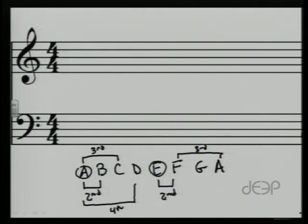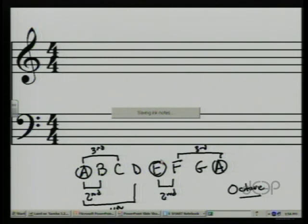A to F is a sixth. A to G is a seventh. And from A to the next A would be called an octave. So this begins to get us this idea of intervals taken care of.